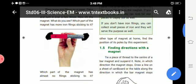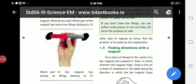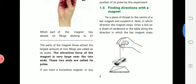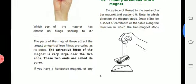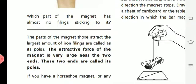If you look at the diagram, the attractive force of the magnet is very large near the two ends. This is the attractive force. In both corners, both the ends, the attractive force are very large, huge. So these two ends are called as poles.